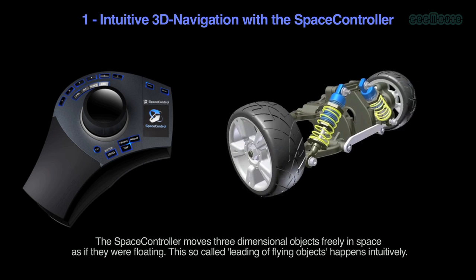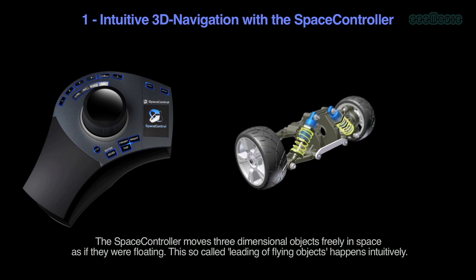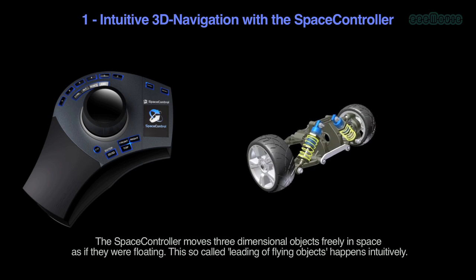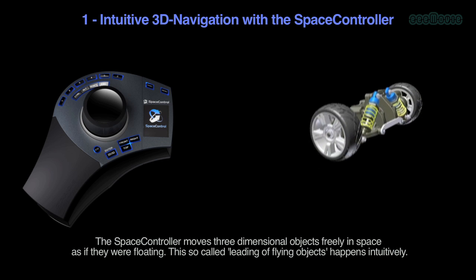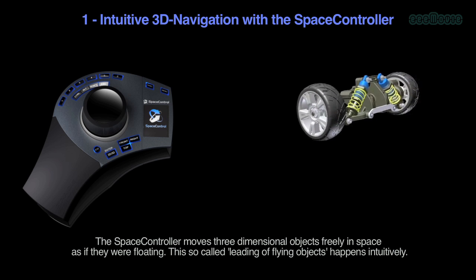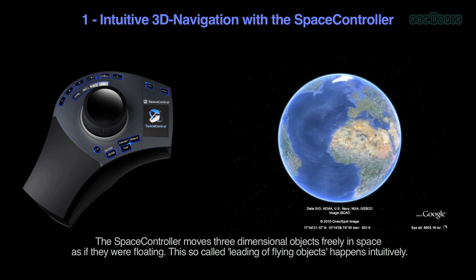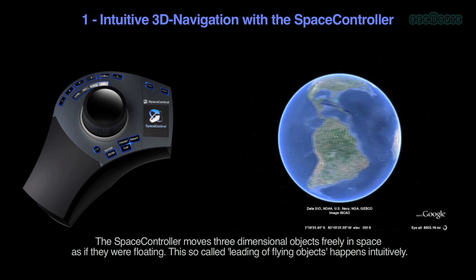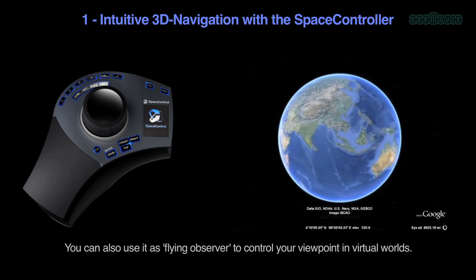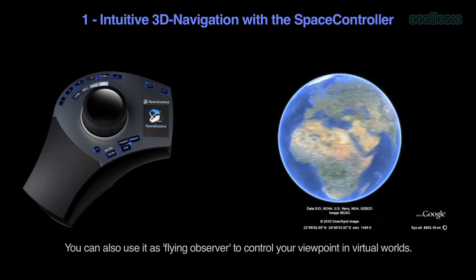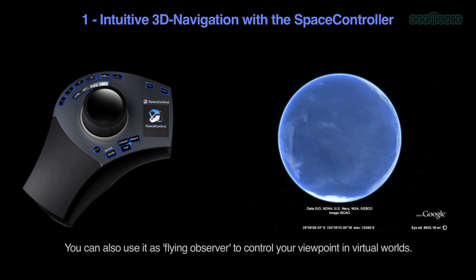Intuitive 3D navigation with the Space Controller. The Space Controller moves three-dimensional objects freely in space as if they were floating. This so-called leading or flying of objects happens intuitively. You can also use it as a flying observer to control your viewpoint in virtual worlds.